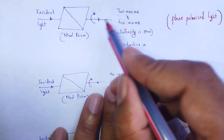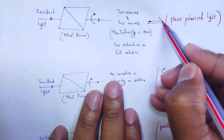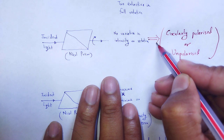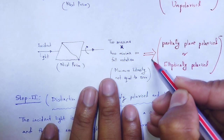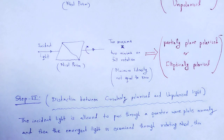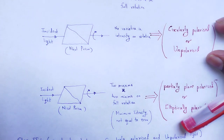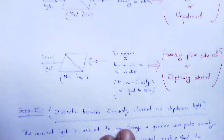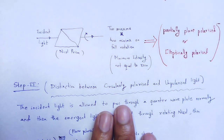So the three outcomes are: the nature of the incident light is plane polarized; next, circularly polarized or unpolarized; then partially plane polarized or elliptically polarized. We then ask: how to distinguish between circularly polarized and unpolarized? And how to distinguish between partially plane polarized and elliptically polarized?